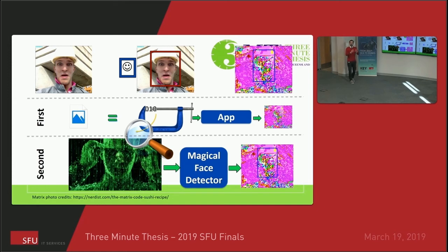If you slightly modify this compact representation of zeros and ones, you end up getting a scrambled face. And if someone wants to see your videos and images, they actually can't see anything. This solves the problem of privacy.